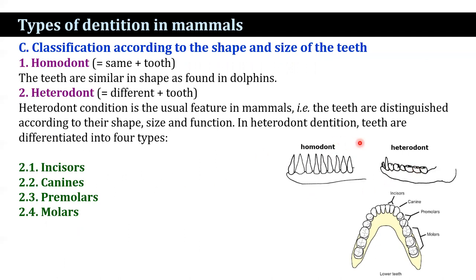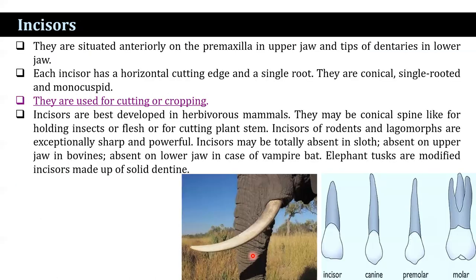In heterodont dentition, teeth are differentiated as incisors, canines, premolars, and molars. Incisors are situated anteriorly on the pre-maxilla in the upper jaw, and at the tips of the dentaries in the lower jaw. Each incisor has a horizontal cutting edge and a single root; they are conical, single-rooted, and monocuspid. They are used for cutting or cropping. Incisors are best developed in herbivorous mammals and may be conical spine-like for holding insects or flesh, or for cutting plant stems. Incisors of rodents and lagomorphs are exceptionally sharp and powerful.